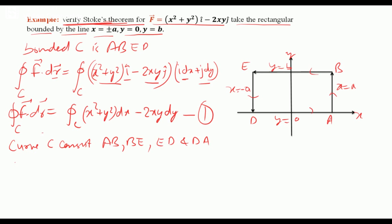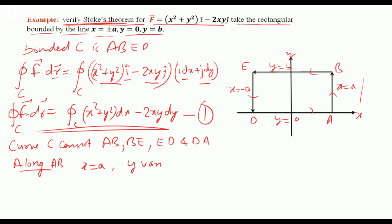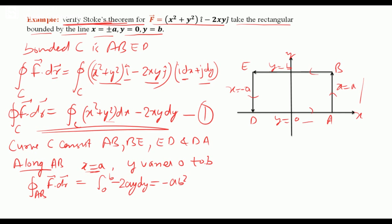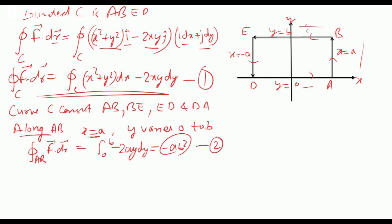Along line AB: x = a and y varies from 0 to b, so dx = 0. The line integral along AB is ∫₀ᵇ −2ay dy = −ab². Call this equation 2.